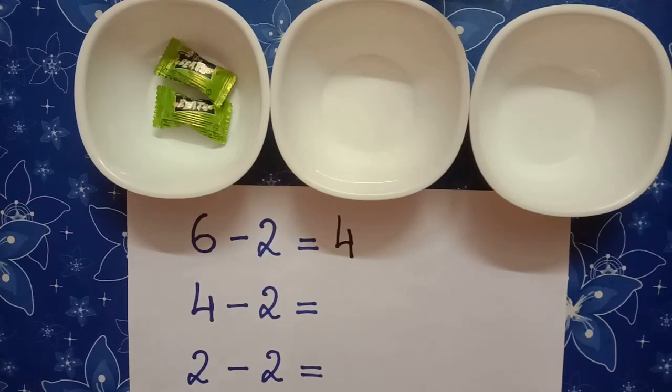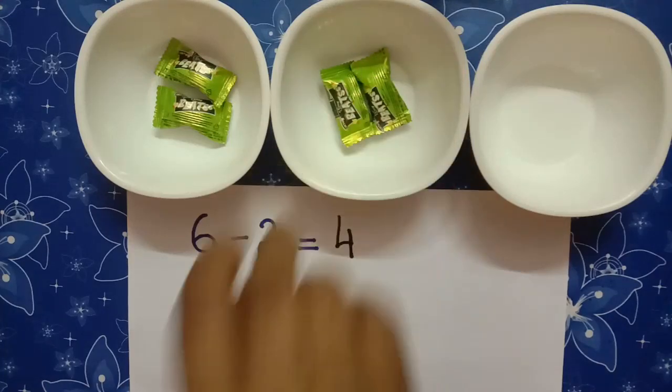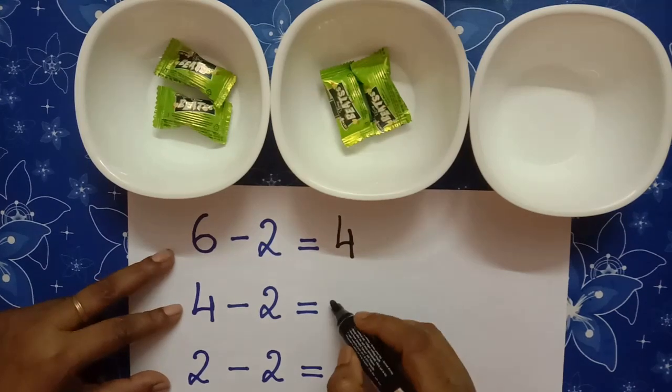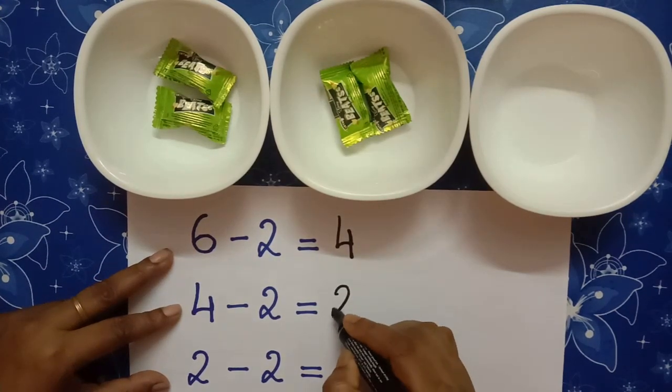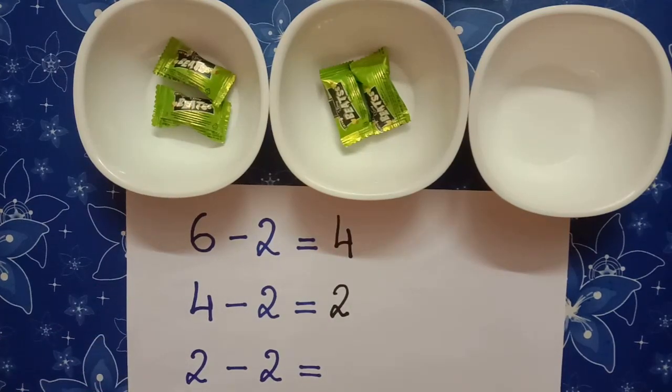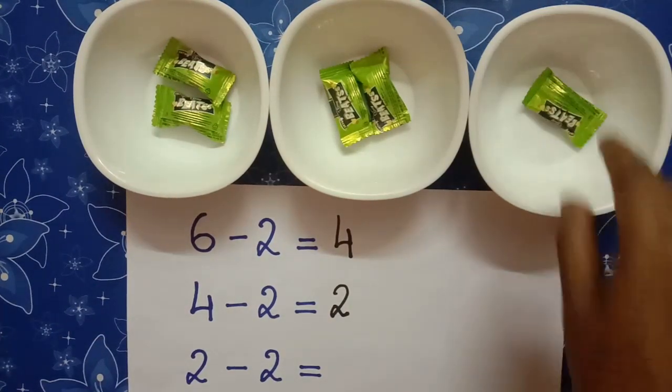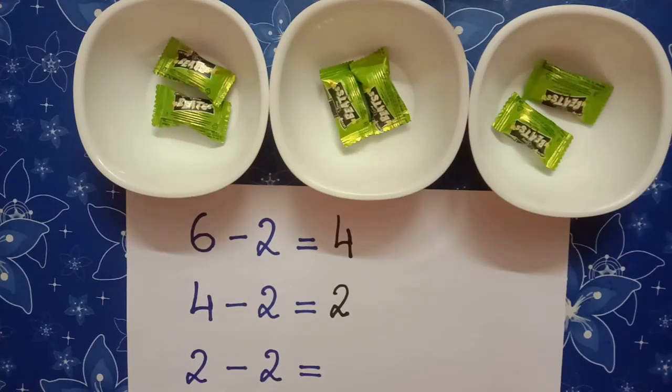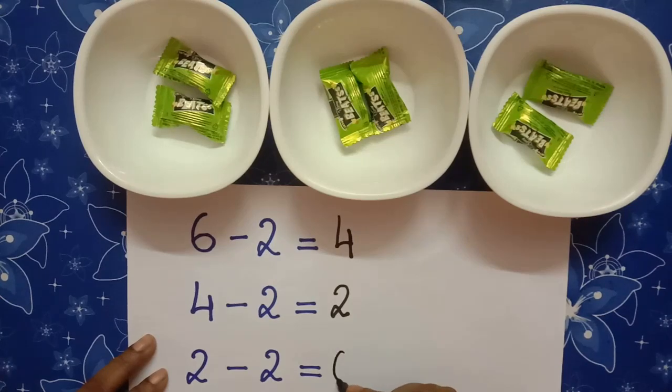Then, she placed 2 sweets in a second bowl. So, after subtracting 2 from 4, we are getting 2. Then, she placed 2 sweets in a third bowl. So, after subtracting 2 from 2, we are getting 0.